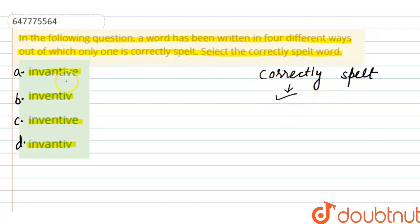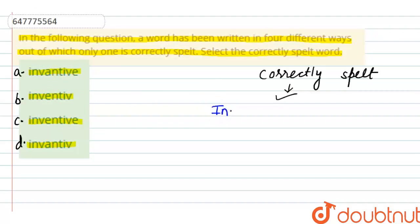कभी भी अगर इस तरीके का Question होता है तो हम क्या करते हैं? पहले ही सही Spelling को Side में लिख लेते हैं ताकि हम Confuse ना हो जाएं, क्योंकि गलत Spelling सारी ही एक जैसी सी दिखती होती है. तो लिख लेते हैं — Inventive की Spelling है I-N-V-E-N-T-I-V-E.